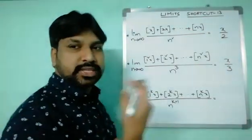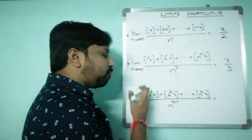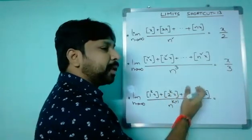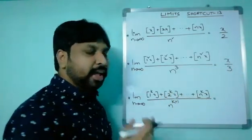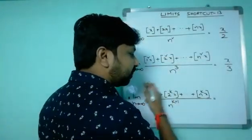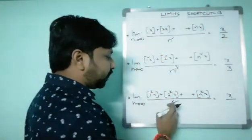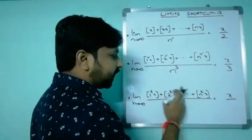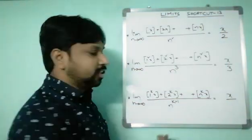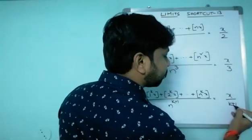What is the secret behind it? The general formula is: the limit as n tends to infinity of bracket(1^k · X) plus bracket(2^k · X) plus so on plus bracket(N^k · X), whole divided by N^(k+1). Whatever brackets are in the numerator, write the numerator as X. For the denominator, look carefully — the power in the numerator is K, so the denominator is just K plus 1. That's the entire shortcut.